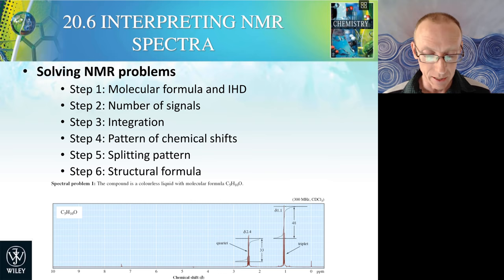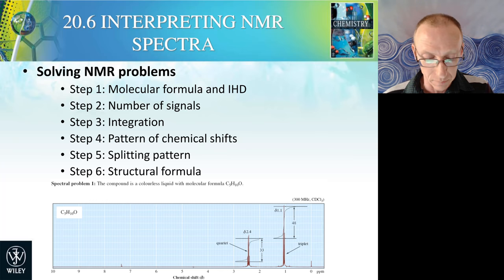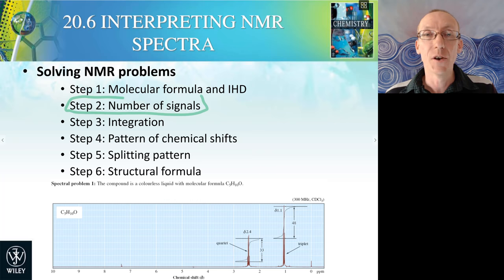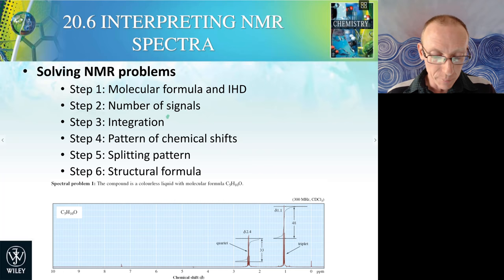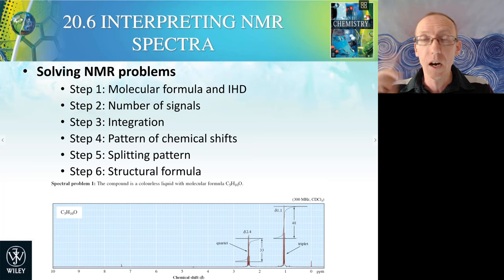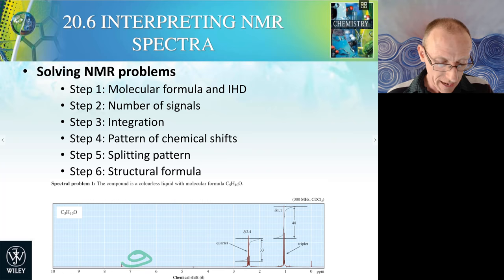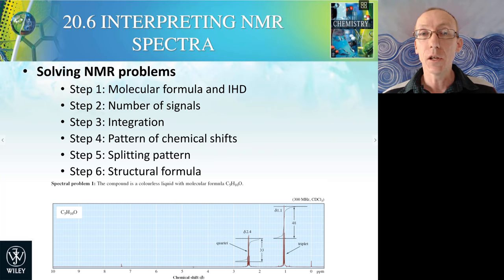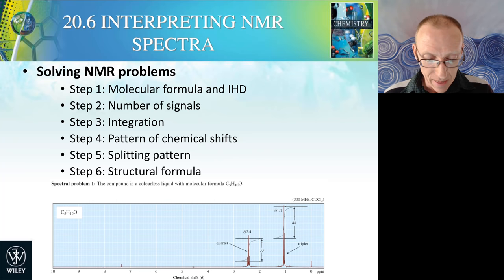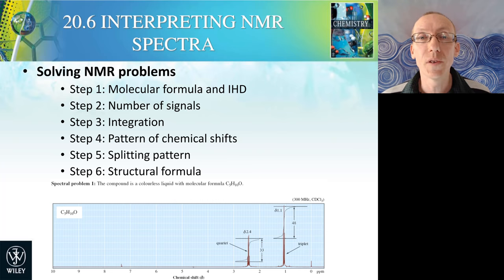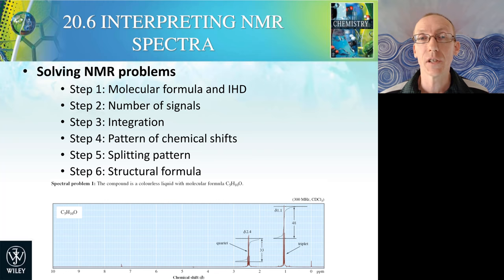When solving an NMR spectral problem, you need to go through a stepwise process. First, work out the molecular formula and the number of double bonds or rings. Then look at the number of signals, which tells you how many non-equivalent protons or carbons there are. In proton NMR, look at the integration of peaks to determine how many hydrogens give rise to each signal. Look at the pattern of chemical shifts — are they in the aromatic region, aldehyde region, or alkyl region? Then look at the splitting patterns to determine how many neighboring protons are present. Hopefully you can then work out the structural formula and how everything connects together. That's a whirlwind tour of NMR spectroscopy — proton and carbon-13 NMR are most important for organic chemistry and working out structures.